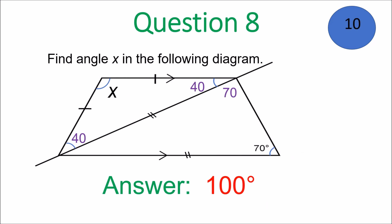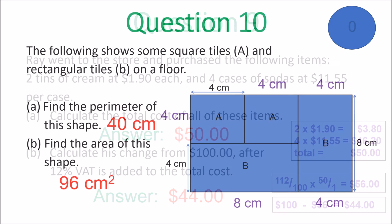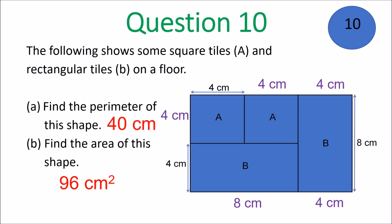Question 8 is 100 degrees — work it out and you'd get the answer using the isosceles triangles. Question 9 A was $50 when you add them all up, then with VAT added and taken away you get $44 for the change. Question 10: the perimeter is 40 centimeters and the area is 96 square centimeters.